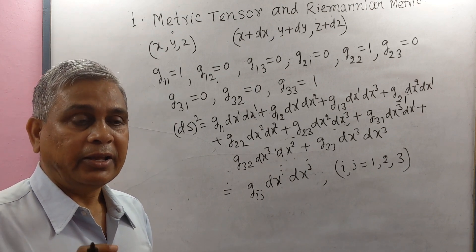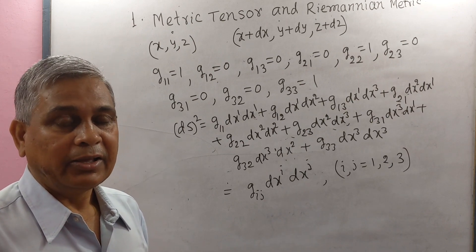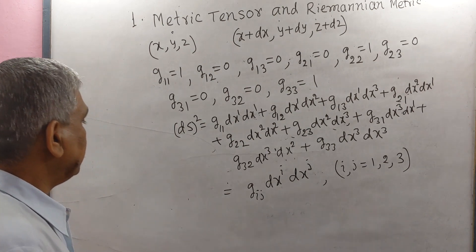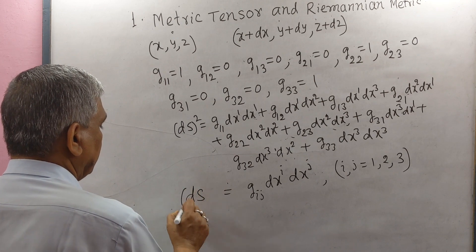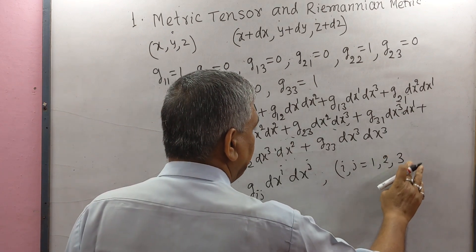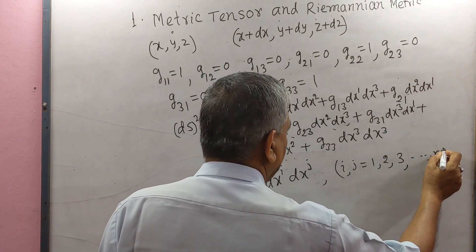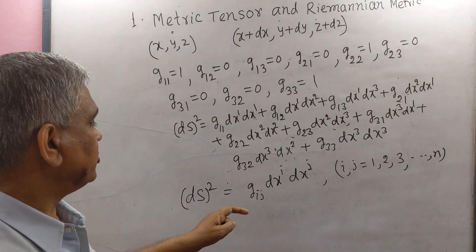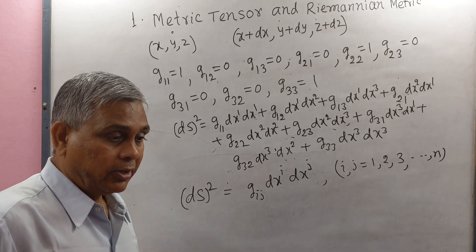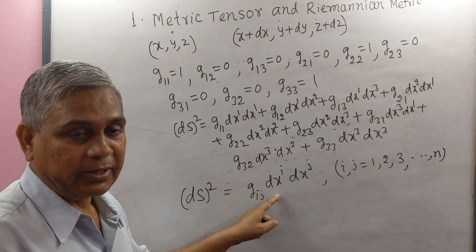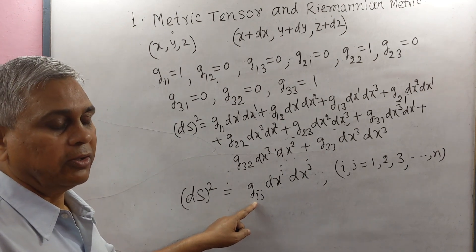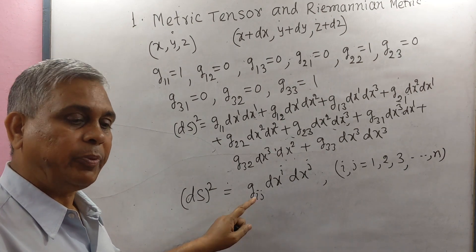So we have to frame a formula for distance in which g_IJ are not always constant — they are variable and are functions of coordinates. Riemann, in his n-dimensional geometry, used this idea and wrote ds² = g_IJ · dxI · dxJ, where I and J range from 1 to n. This expression is called the Riemannian metric or line element. And g_IJ is called the metric tensor or fundamental tensor.